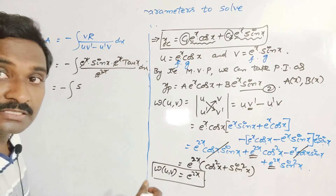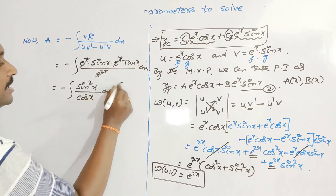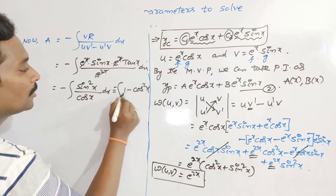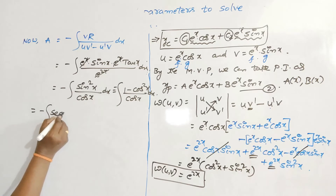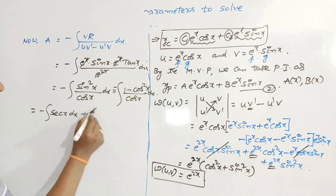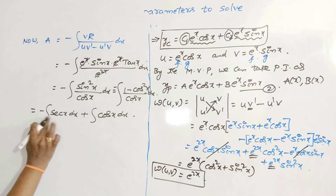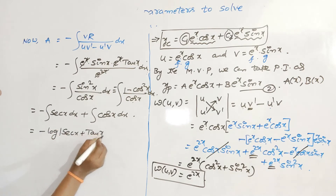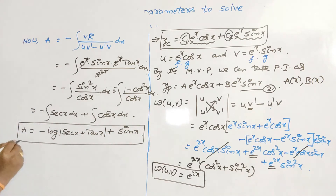Writing sin²x = 1 − cos²x: a = −∫(1 − cos²x)/cos x dx = −∫(sec x − cos x) dx = −[log|sec x + tan x| − sin x] = −log|sec x + tan x| + sin x. This is the value of a.